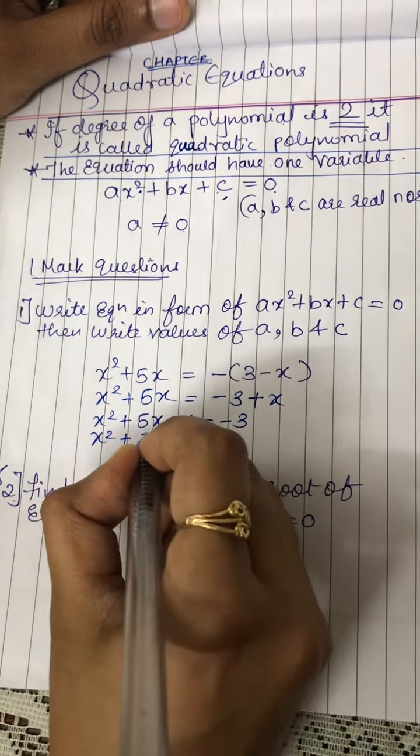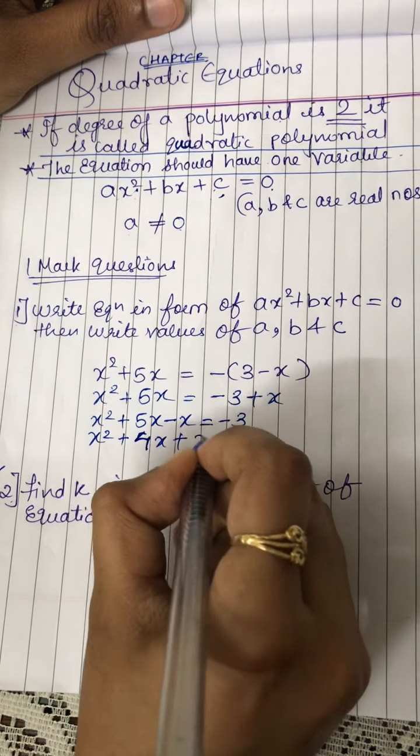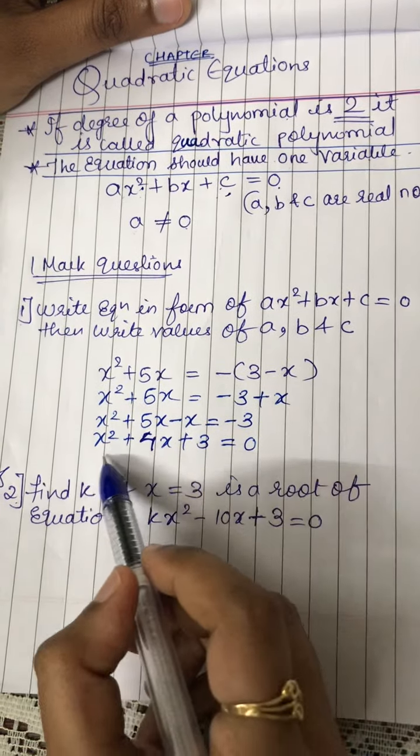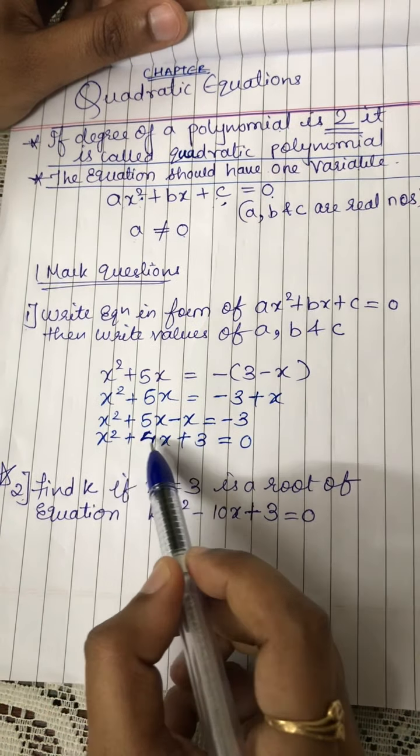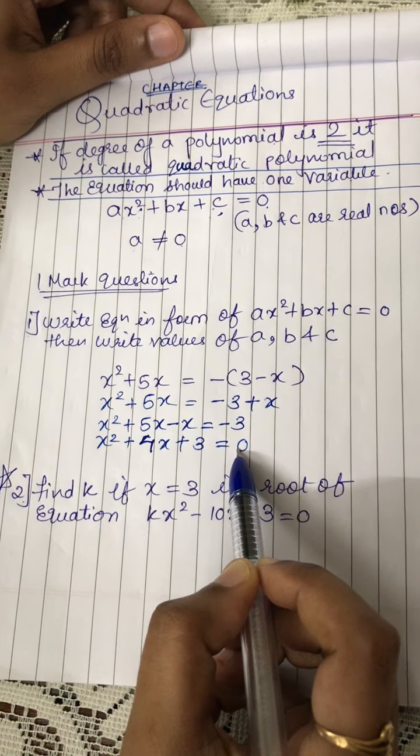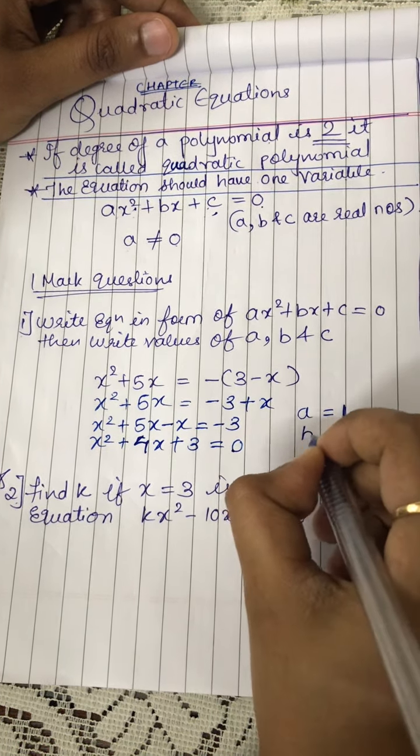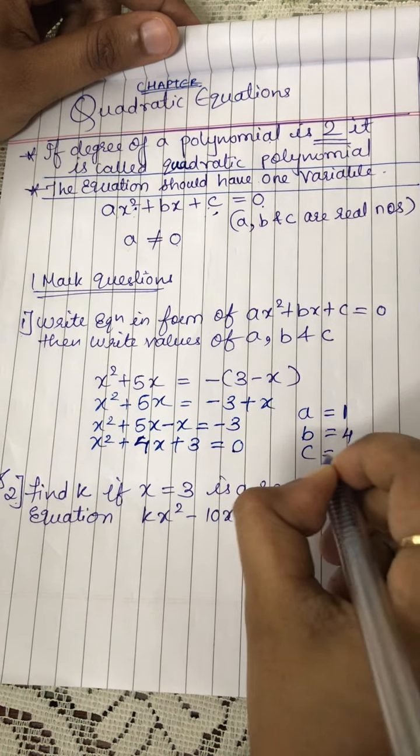So x square plus 5x minus x is 4x and plus 3 is equal to 0. Our equation is in the form of ax square plus bx plus c. Now compare it and get the value for a, b and c. On comparing, you will get a is equal to 1, b is equal to 4 and c is equal to 3.